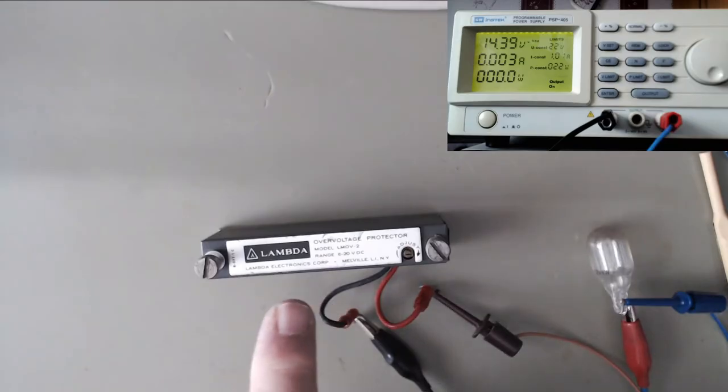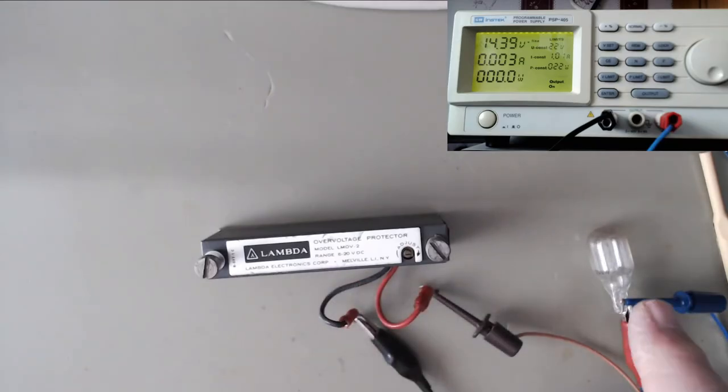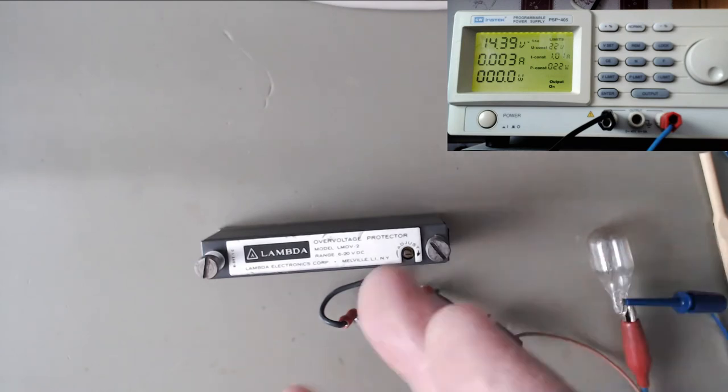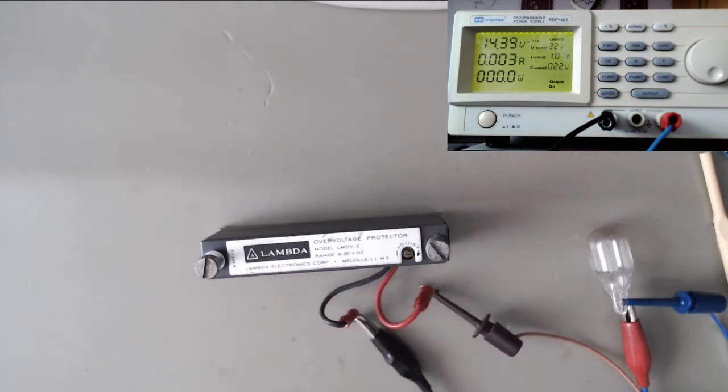Here it is, the overvoltage protector connected to a load of a bulb. It's a bulb in series with it which will light when that goes into the short mode over here. You can see we're putting 14.39 volts at 3 milliamps into it and we'll slightly wind it up and see where it trips.